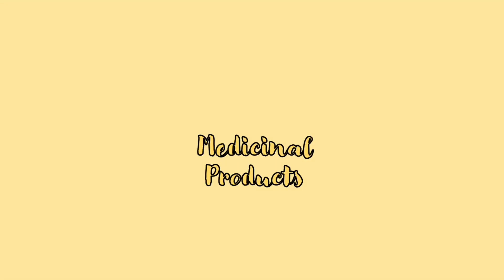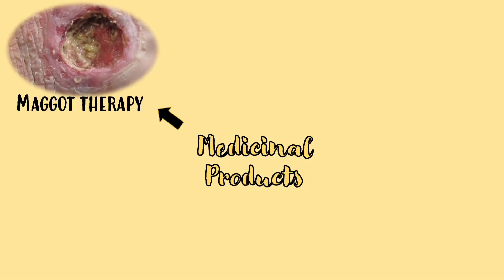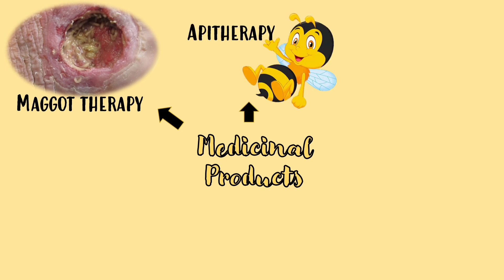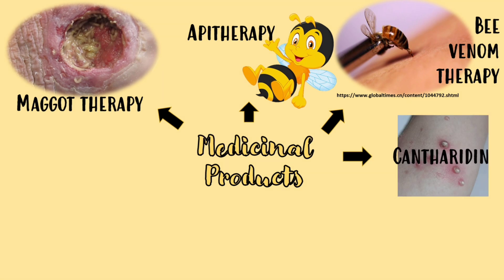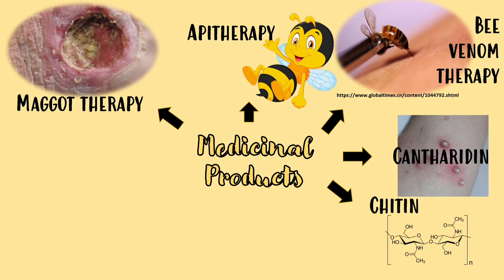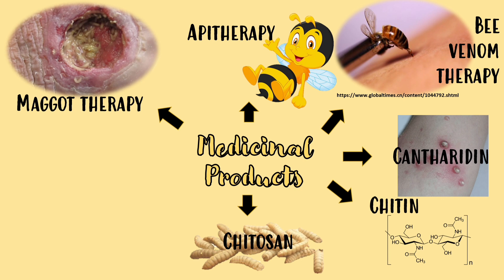Fifth, the organisms or their products can also be used in medicine. For instance, maggot therapy, wherein laboratory-reared and disinfected maggots are placed in a non-healing wound to feed on dead cells and induce healing by the allantoin it releases. Apitherapy, or the use of bee or any bee product in medicine — an example is bee venom therapy, which has been used to help relieve pain from rheumatoid arthritis. Cantharidin from blister beetles as medication against molluscum. Chitin, chitosan, and their derivatives are used for wound healing.